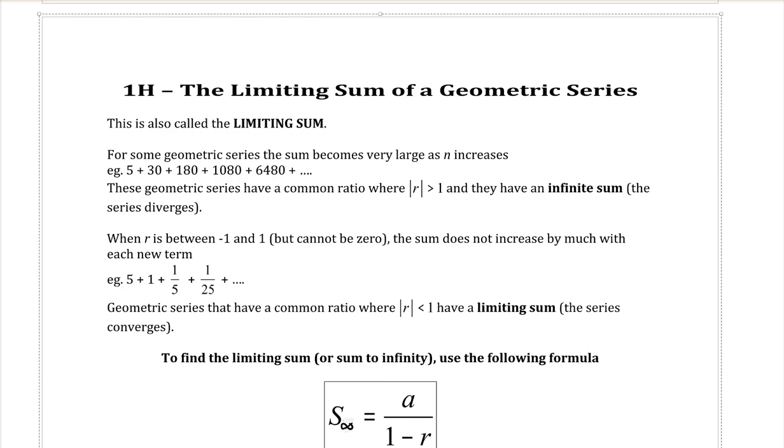Some series will have a limiting sum, which means that if we were to add all of the terms in the entire series, in other words, infinite terms, we would get a set finite sum, one number that would represent the sum of that whole series.